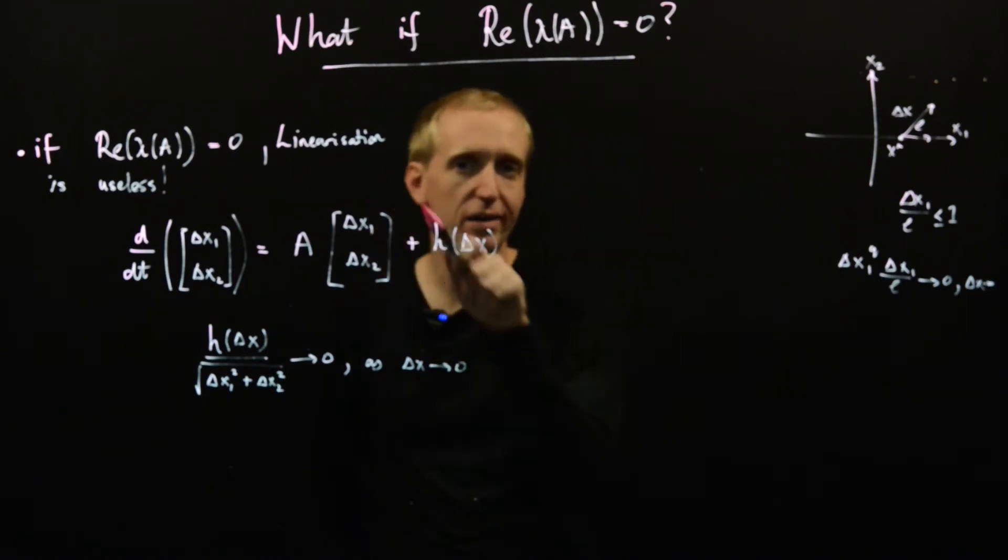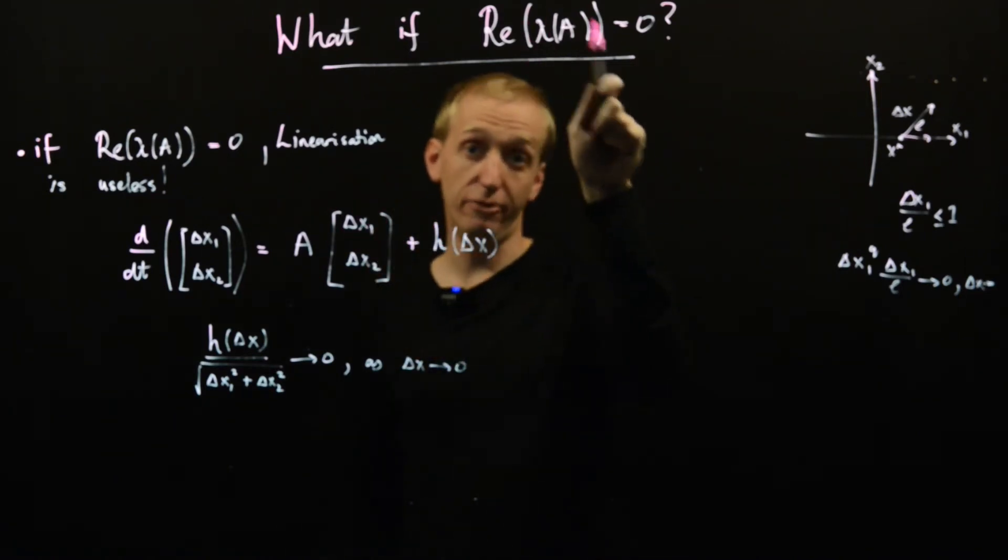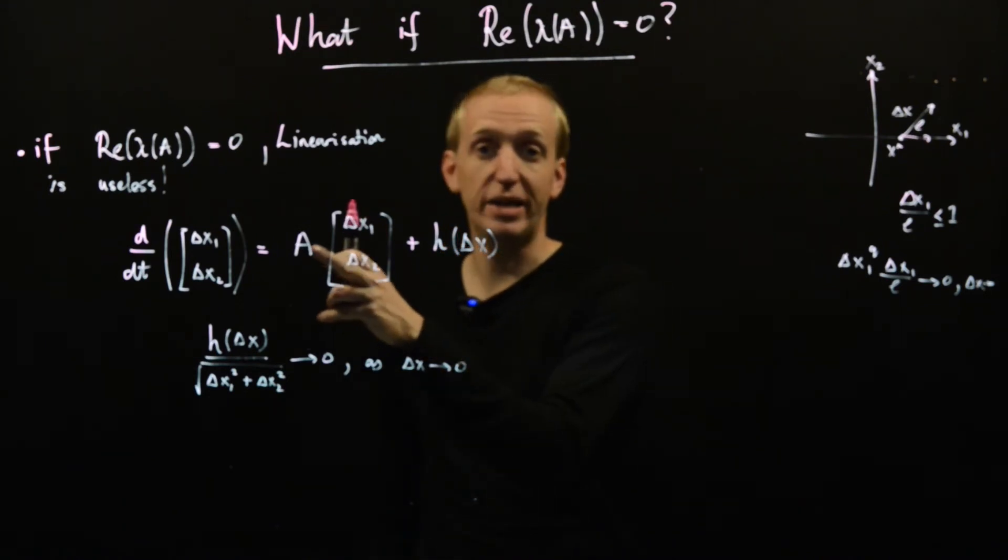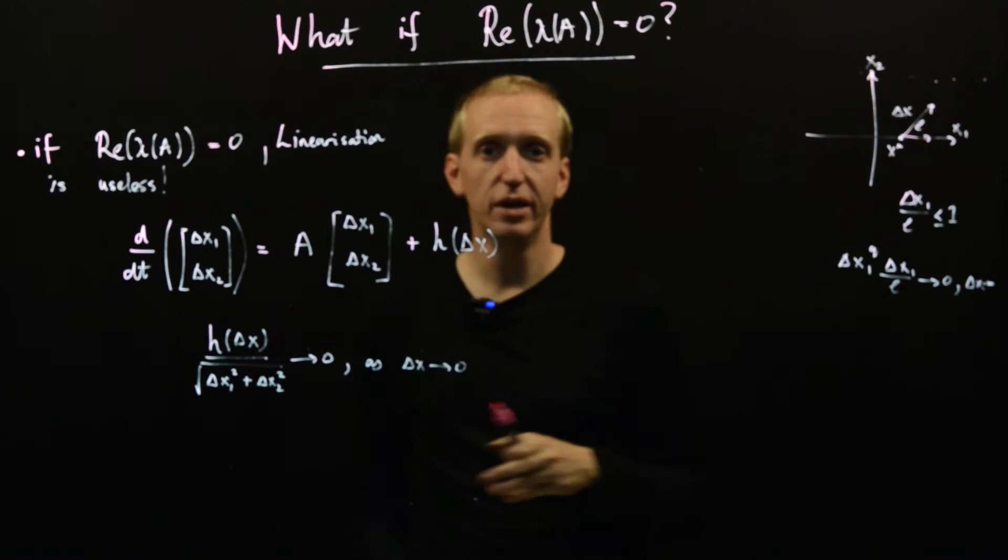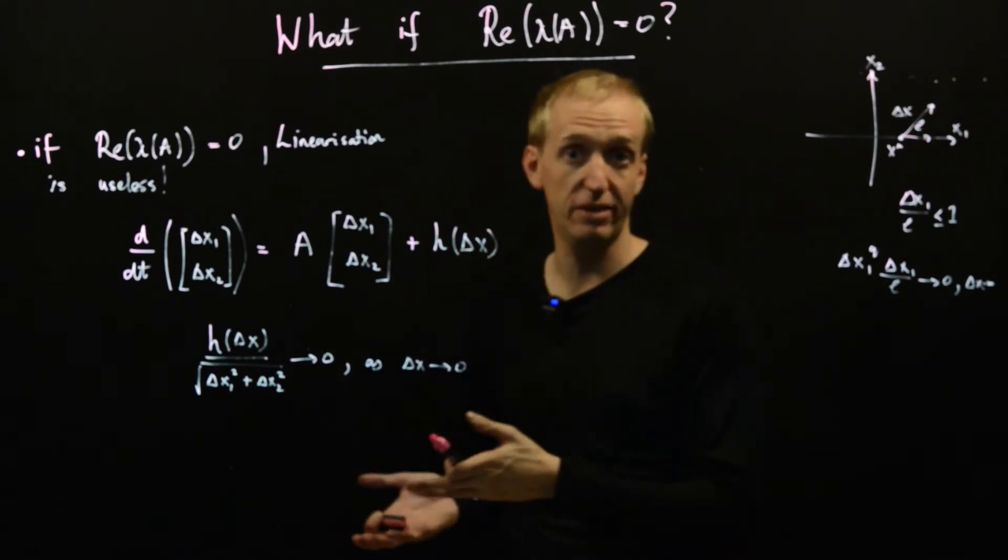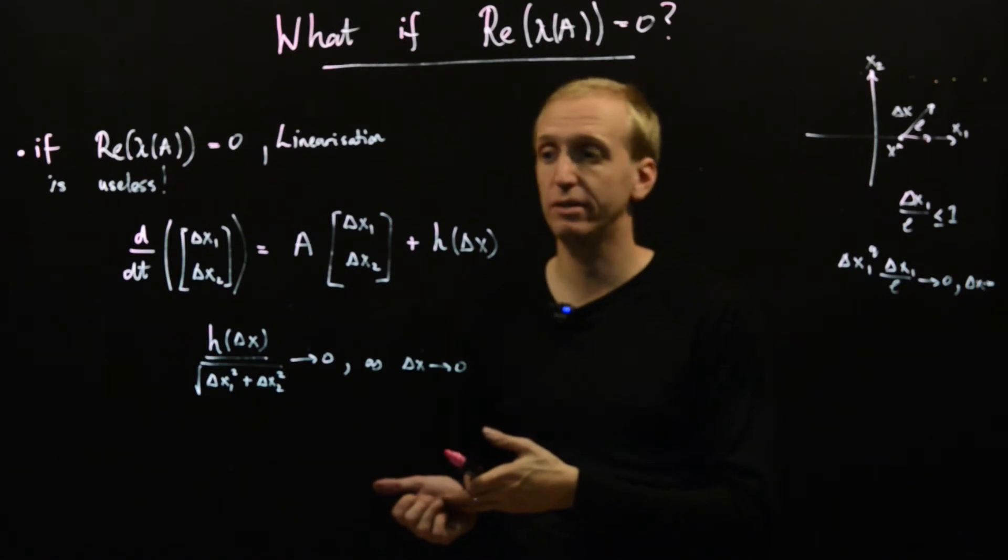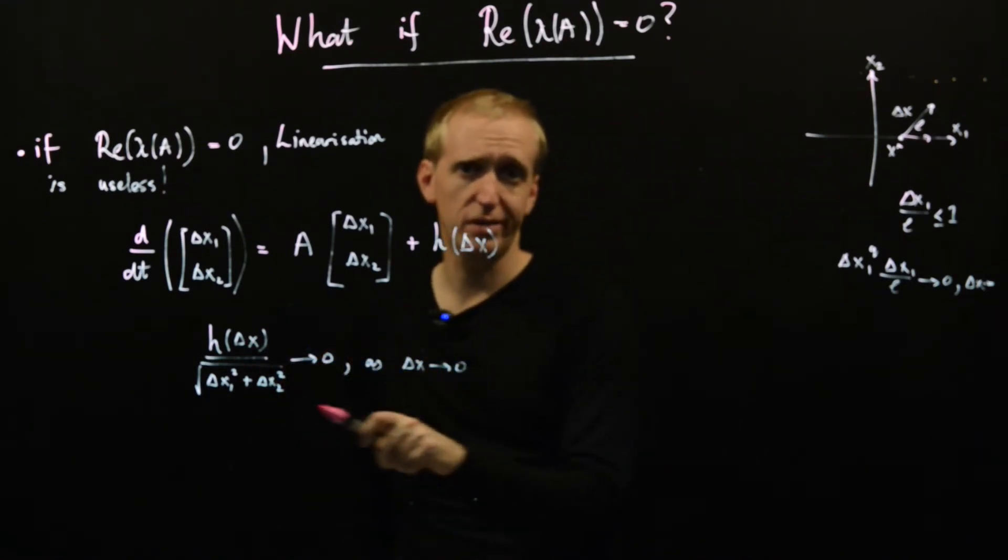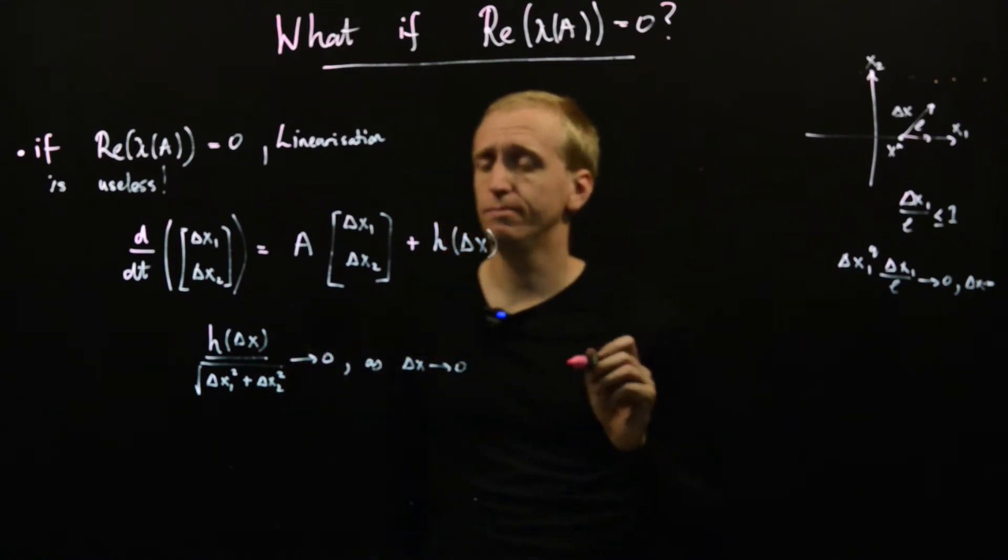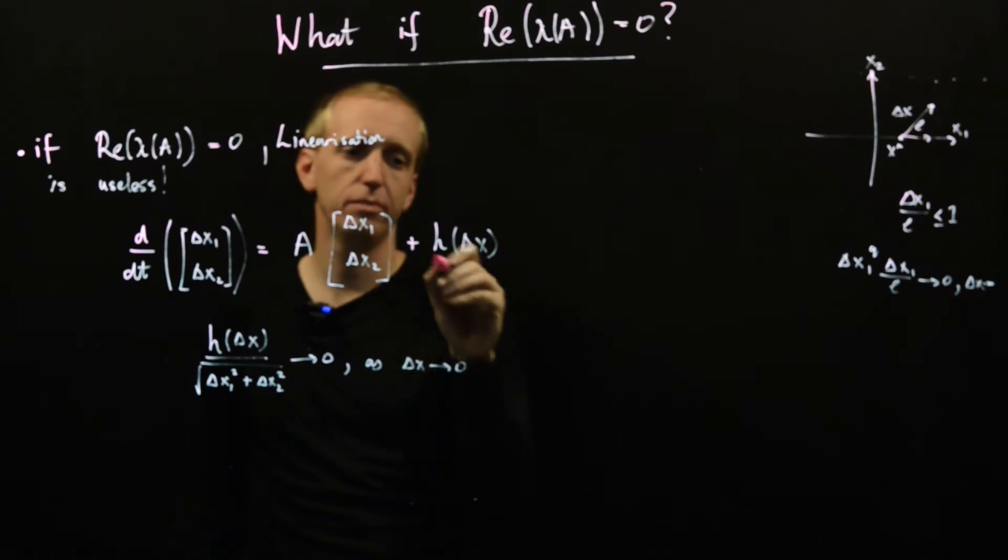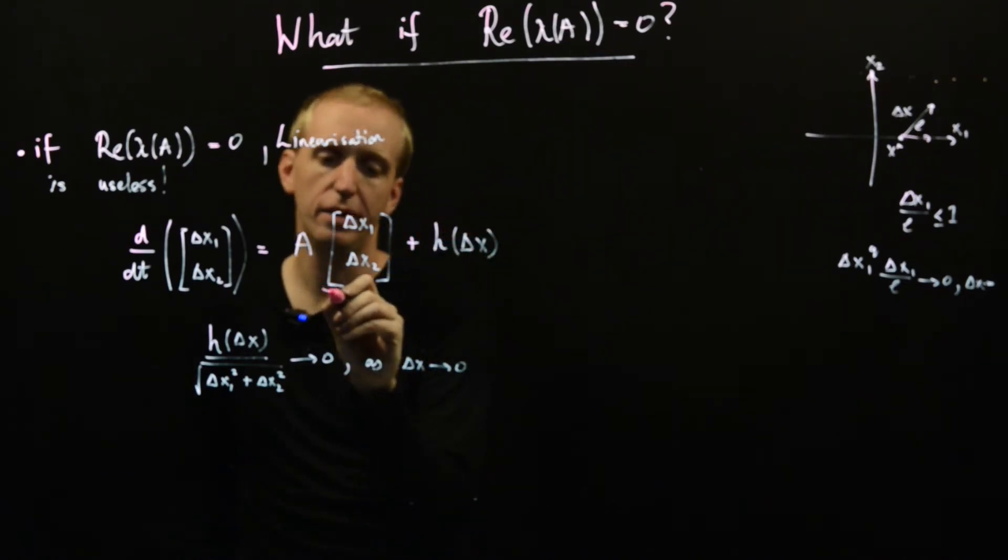So this is a perfectly valid linearization, even if this A matrix has zero eigenvalues. So what is going wrong here? Why do we lose all our insight if we do happen to have eigenvalues with real part equal to zero? So let's just think a little bit more about what this is trying to tell us. So let's just do that by comparing this term to this term.